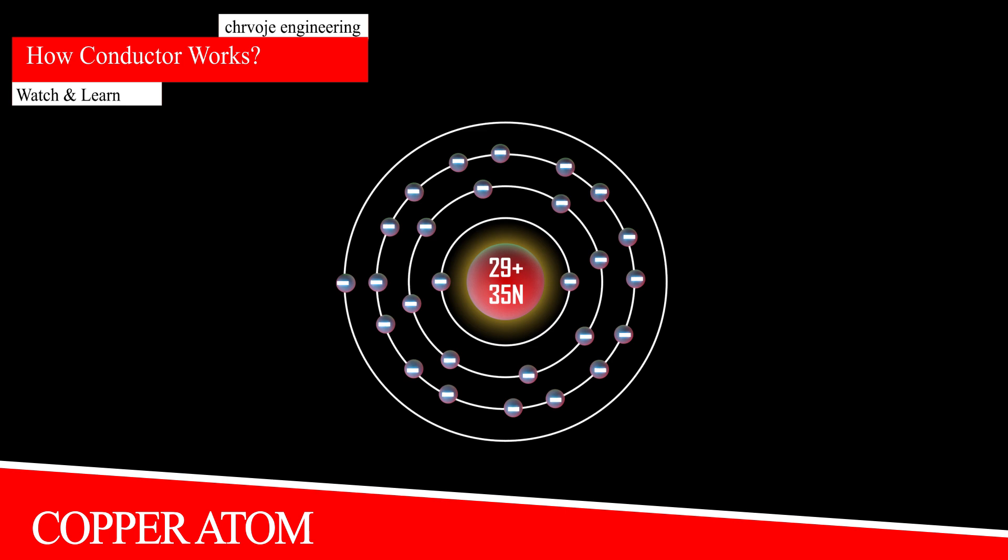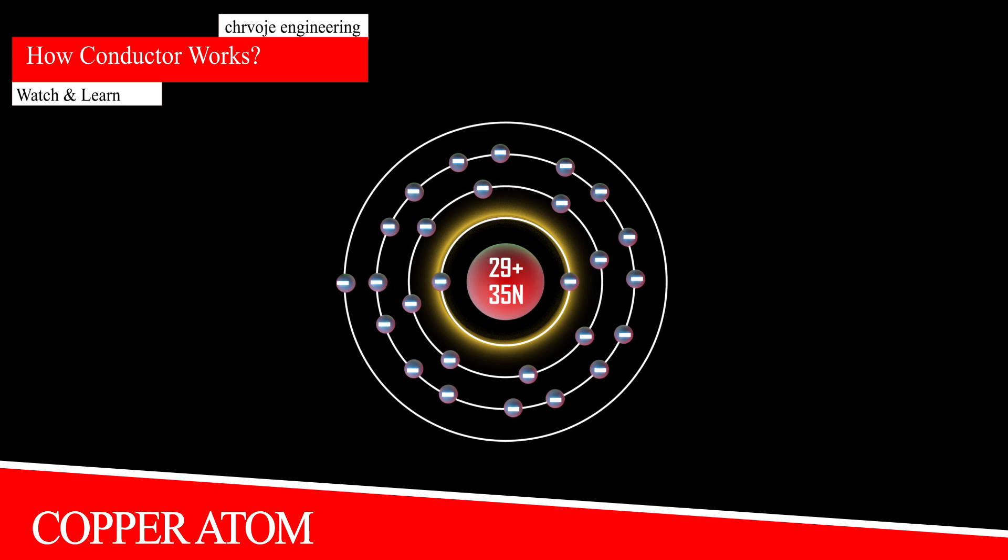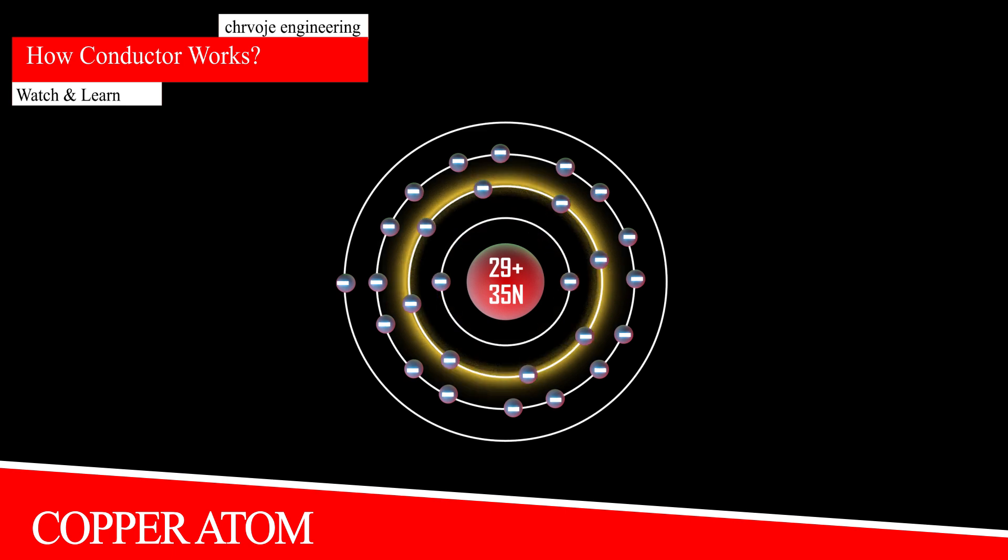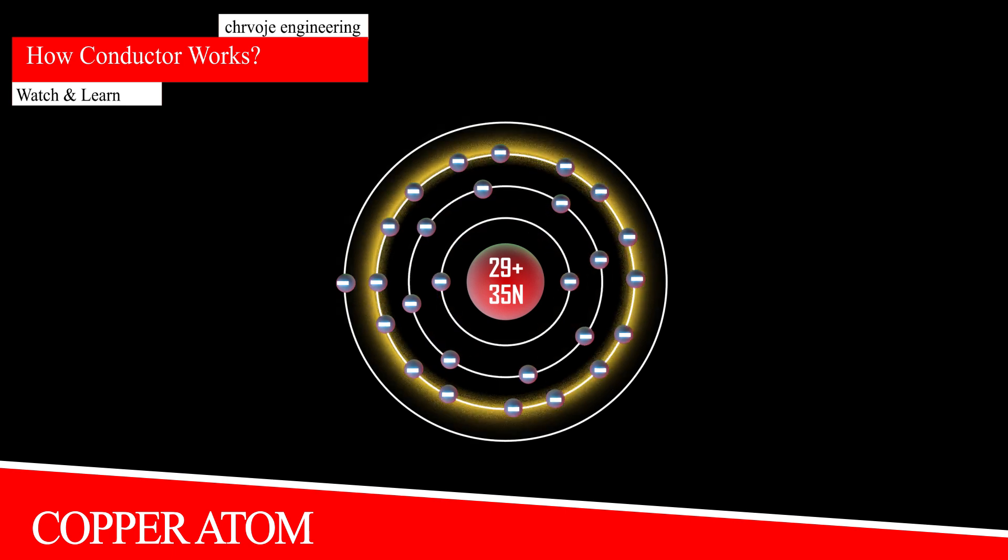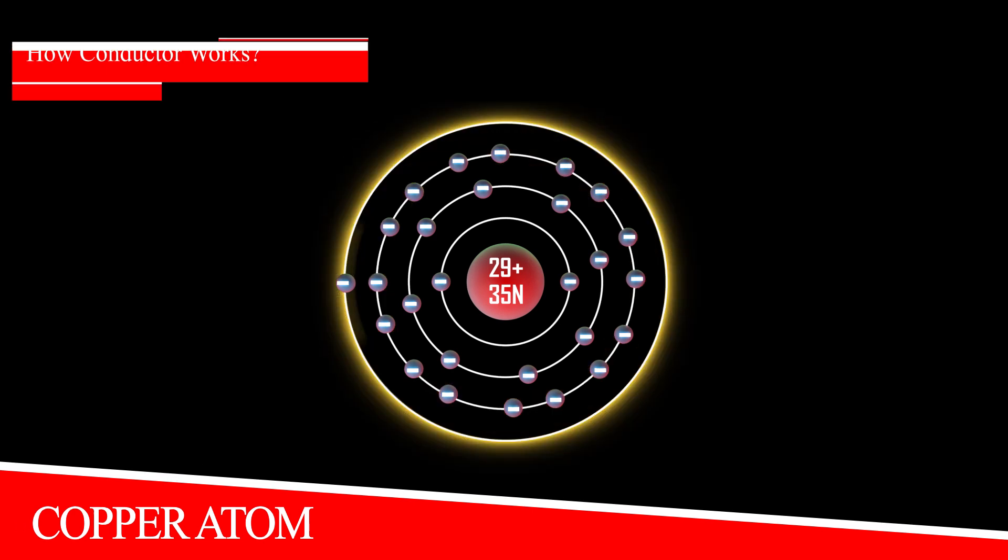The copper atom has 29 positively charged protons and an equal number of electrons orbiting its nucleus in distinct shells. After filling the first shell with two electrons, the second with eight, the third shell with its maximum 18 electrons, the outermost shell of copper is occupied by a single electron.